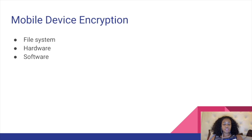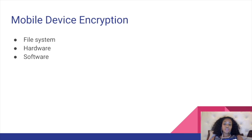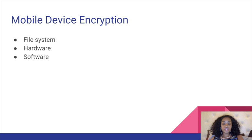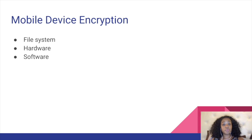For mobile device encryption, everyone has iPhones, Androids, and Google has a new phone too. Using Apple as an example, Apple uses file system hardware and software encryption. The file system is written to flash memory and contains both the operating system and your data. What they do is scramble data written to flash memory and then unscramble anything that is read back into main memory. That's an example of mobile device encryption using file system hardware and software.